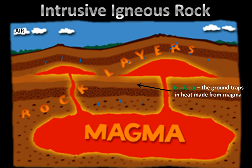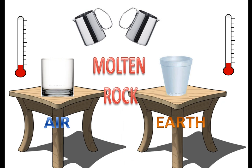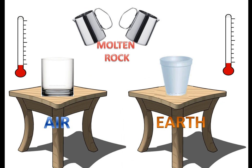The best way to explain this is by using an analogy — hot chocolate. Located on the top of the screen, we have two metal pitchers filled with hot chocolate. On the bottom left screen, we have a glass on a little table, and that glass is going to represent air. On the right side of the screen, we have a styrofoam cup, which is going to represent the Earth, or the ground. The hot chocolate itself is going to represent molten rock. We're going to pour the hot chocolate into both the glass and the styrofoam cup.